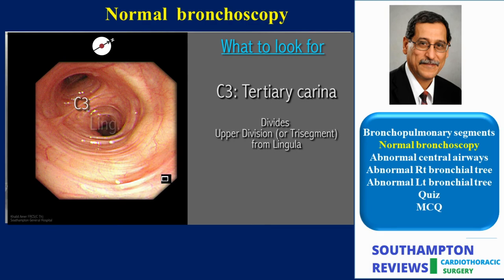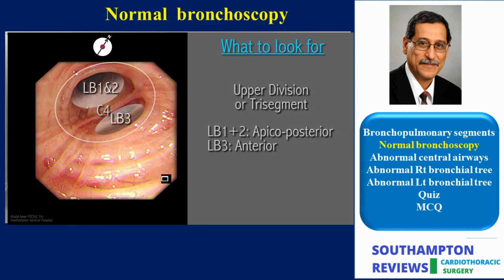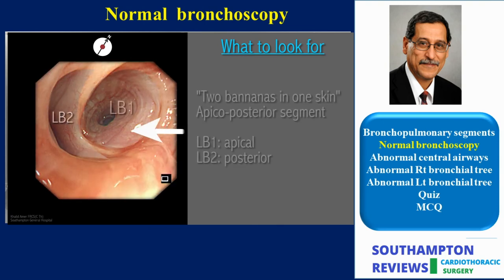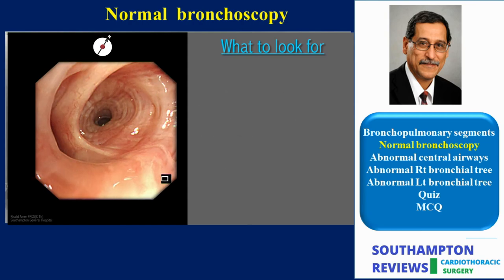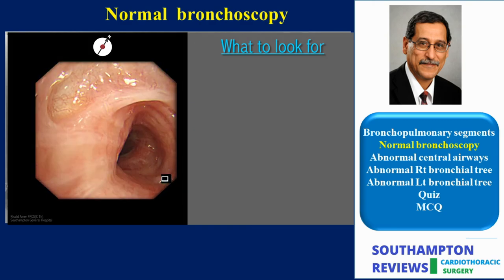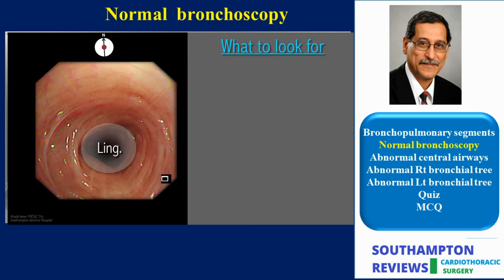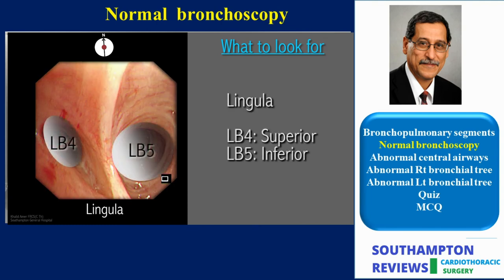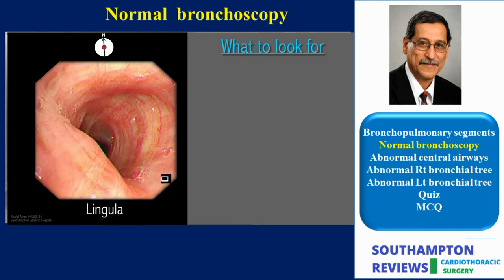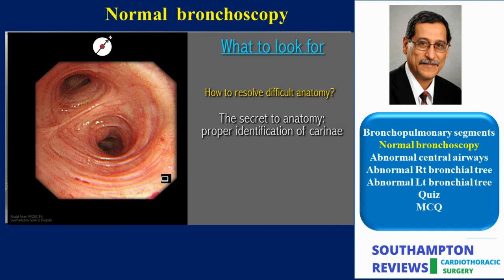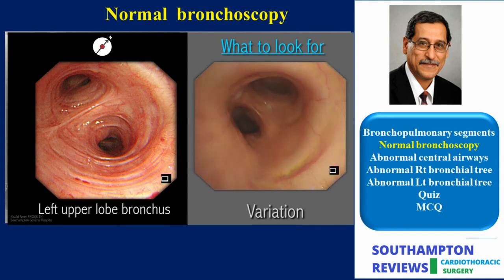On advancing the scope into the upper division, we again look for the quaternary carina, which divides the apico-posterior segmental bronchus Lb1+2 and the anterior segmental bronchus Lb3. The scope is then introduced into the lingula to expose the two segmental divisions: the superior Lb4 and the inferior Lb5. Before examining the lower lobe, let us examine some variation of the left upper lobe. This is a good example of how carina recognition plays a crucial part in resolving confusion.